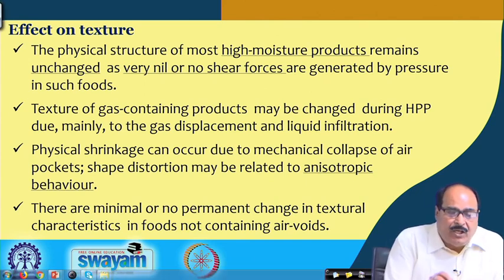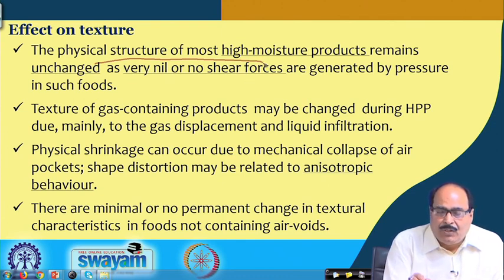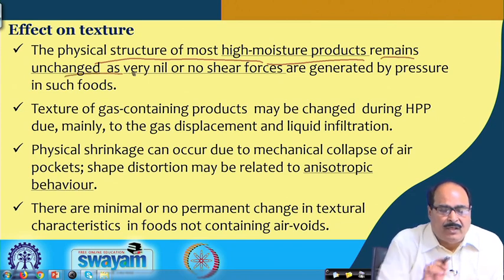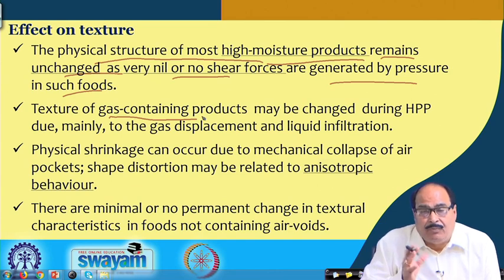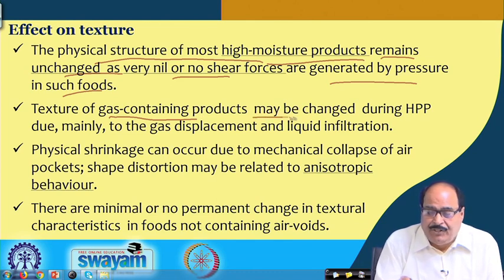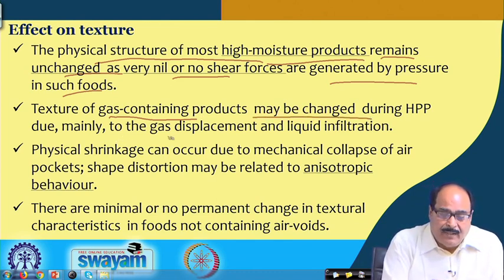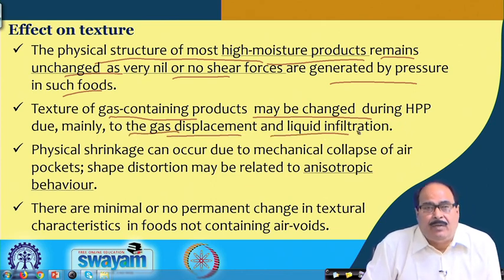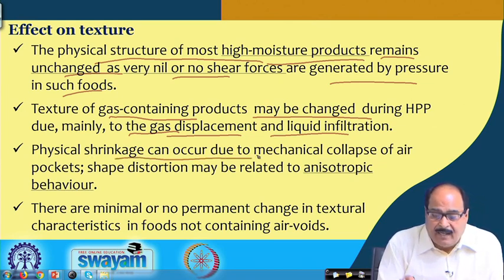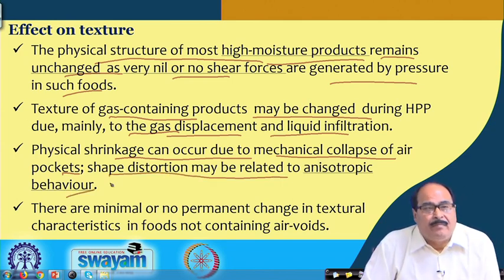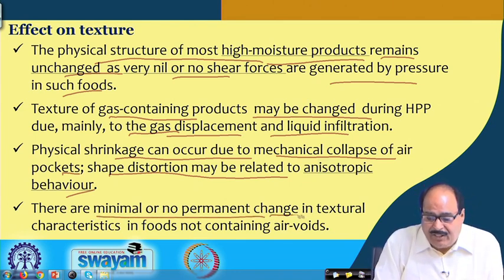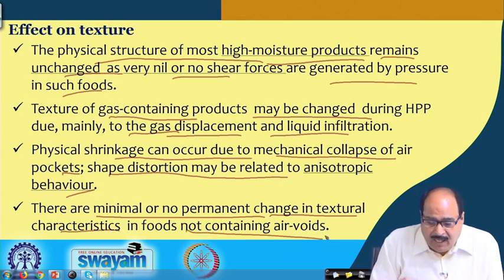Regarding the effect on texture: the physical structure of most high-moisture products remains almost unchanged because very little or no shear forces are generated by pressure in such high-moisture foods. The texture of gas-containing products may be changed during high pressure processing mainly because of gas displacement and liquid infiltration. Physical shrinkage can occur due to mechanical collapse of air pockets, and shape distortion may be related to anisotropic behaviour. However, there are minimal or no permanent changes in textural characteristics in foods not containing air voids.